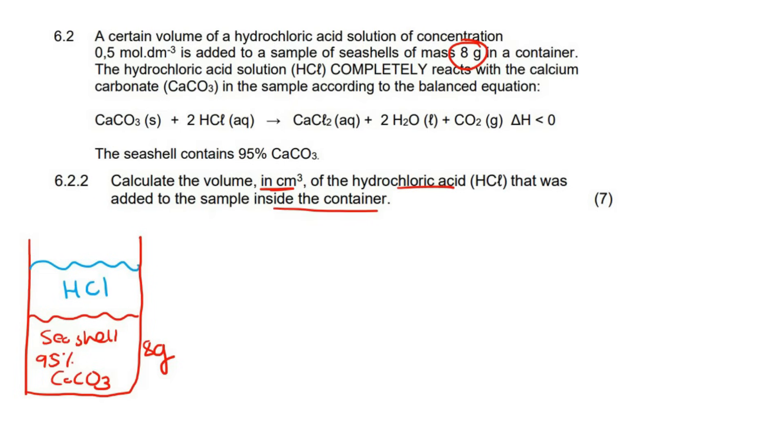So what we can quickly go do is let's go see how much calcium carbonate we actually have. We know that the seashell is eight gramsLet's go work out what is 95% of eight. So you could just say 95% on your calculator, or you can say 95 over 100 multiplied by eight. And that's going to give you 7.6 grams. So now check this out, guys. Look how easy this actually is.